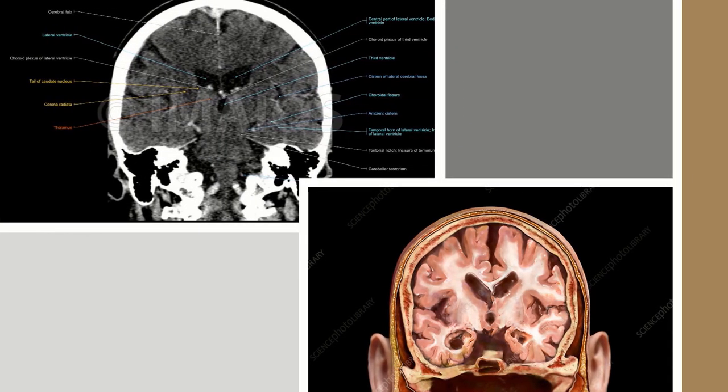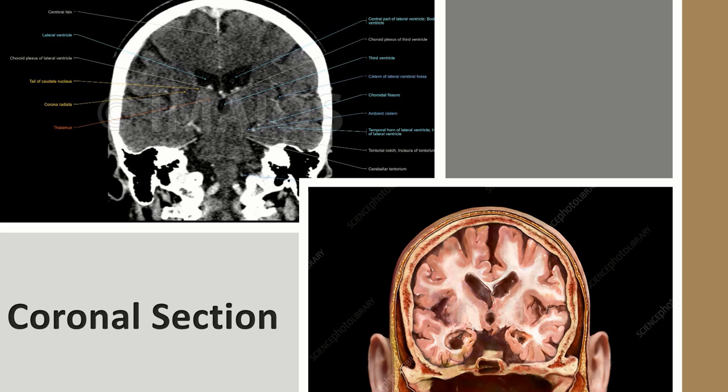There are three main CT sections. First, the coronal section, which is taken along the coronal axis. The coronal axis divides the body into anterior and posterior halves, and this is exactly what the coronal section does.